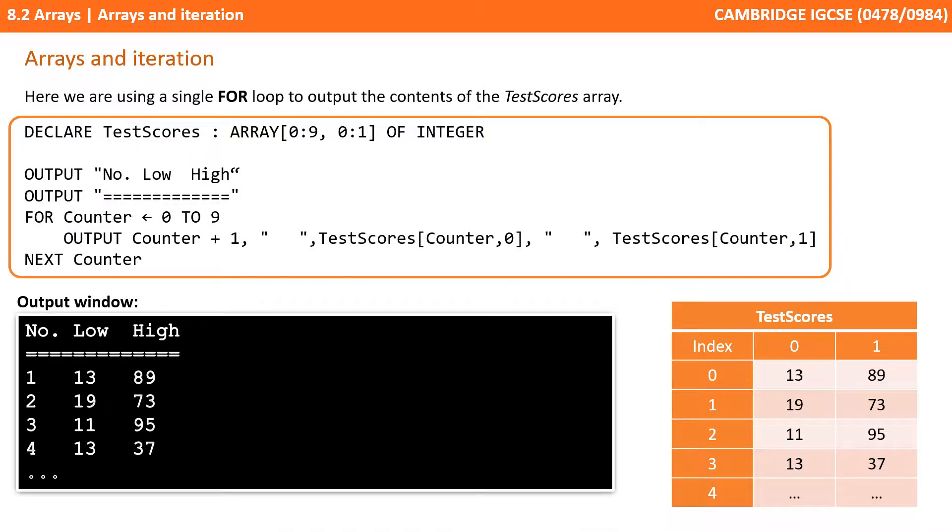If we want to output the contents of this two-dimensional array, we can just use a single loop. Here we have a couple of nice output lines that happen outside the loop, providing us with a heading. Then we've got our single loop that's going to go through each row, starting at row 0 down to row 9. But the output line looks quite complex.